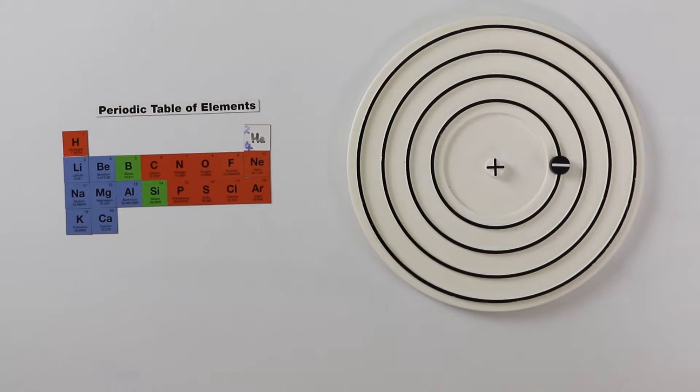The nucleus is made up from two particles, protons and neutrons. The sum of these gives us the atomic mass of the atom.